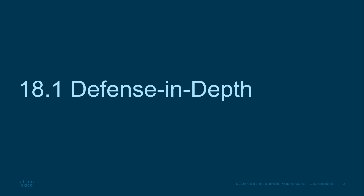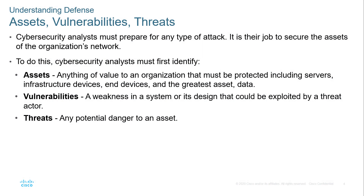In section 18.1, defense in depth: when we are looking at any type of attack, the goal is to protect against the various forms of attack. We do that by securing our assets. An asset could be anything of value to the organization — equipment, information, intellectual property, data, and everything in between. A vulnerability is a weakness in a system or design that can be exploited by a threat actor. A threat is someone wanting to do harm. So we have assets, vulnerabilities, and threats — a potential danger specifically to an asset.